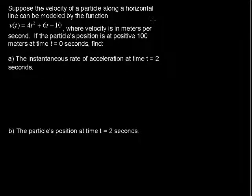In this video I'll talk about using derivatives to find acceleration. The problem is, suppose the velocity of a particle along a horizontal line can be modeled by the function v(t) = 4t² + 6t - 10, where velocity is in meters per second.